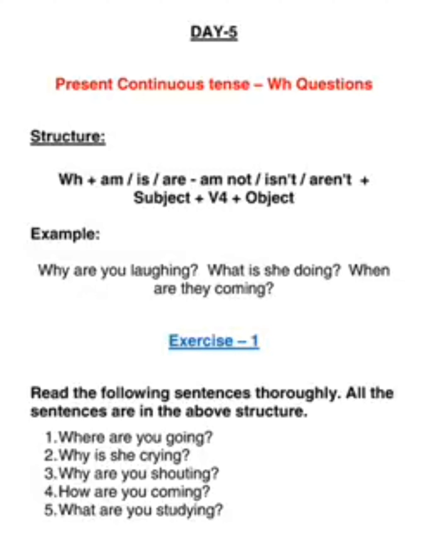So shall we start exercise 1? Exercise 1 — read the following sentences thoroughly. All the sentences are in the above structure of WH questions. Number 1: here you get where, and then you get are. You can't say 'where you are going' — you have to say 'where are you going.'